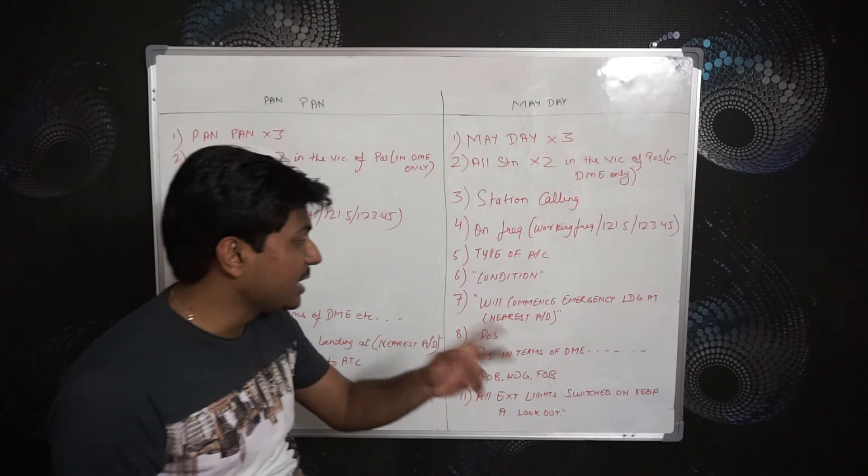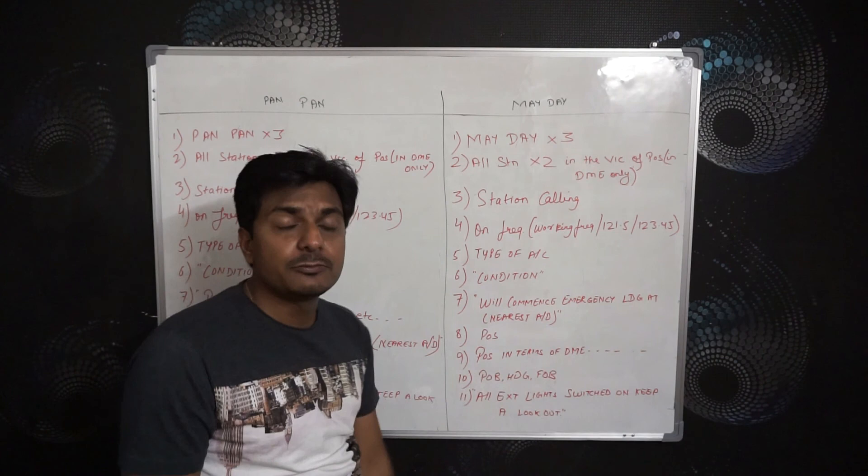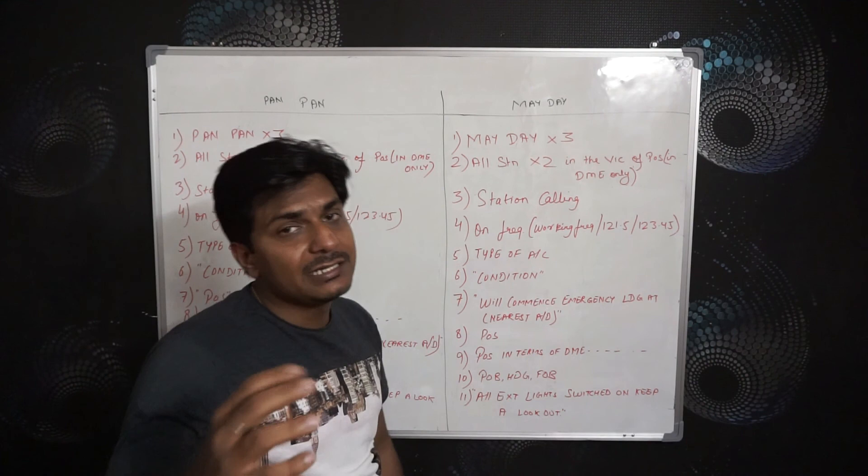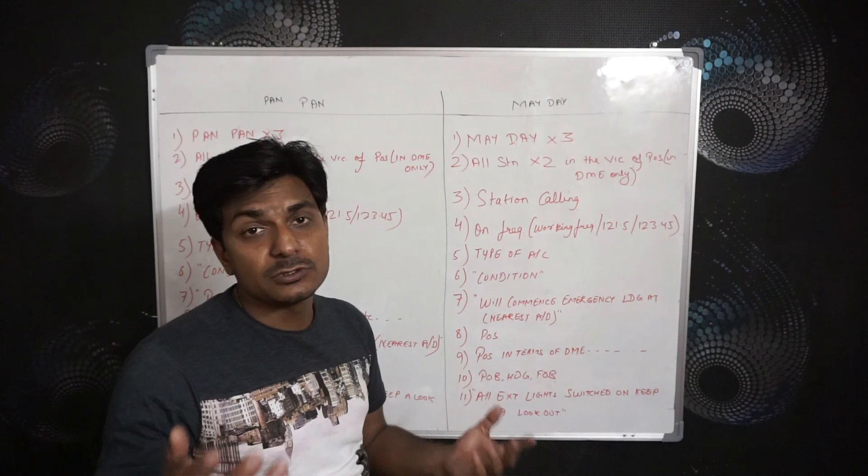Then 'position' — that is a spoken word — and give position in terms of DME, not nautical miles or time. Then flight level, route — the same format. Then persons on board, heading, and fuel on board. Persons on board will be as per your type of aircraft. Heading can be determined as per your position and route you are following.